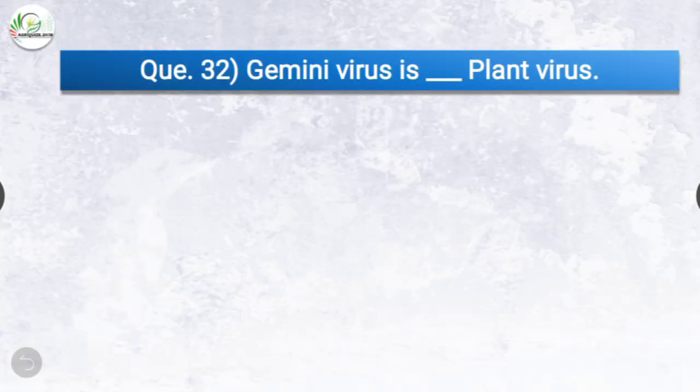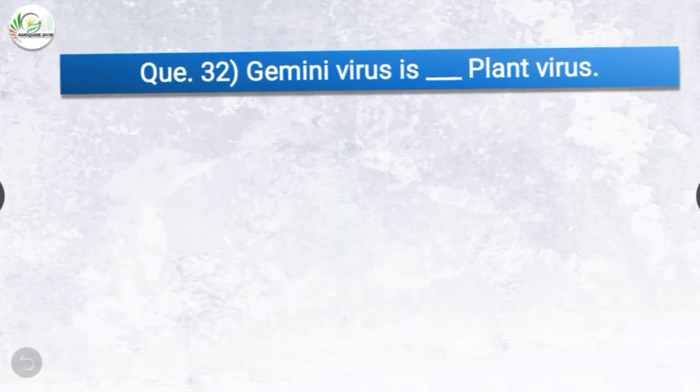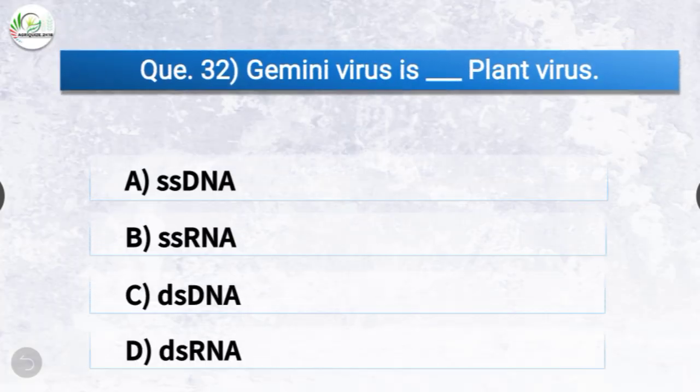Question number thirty-two: Gemini virus is dash plant virus. The options are single-stranded DNA, single-stranded RNA, double-stranded DNA, or double-stranded RNA. The correct answer is option A, single-stranded DNA. Gemini virus is a single-stranded DNA plant virus.